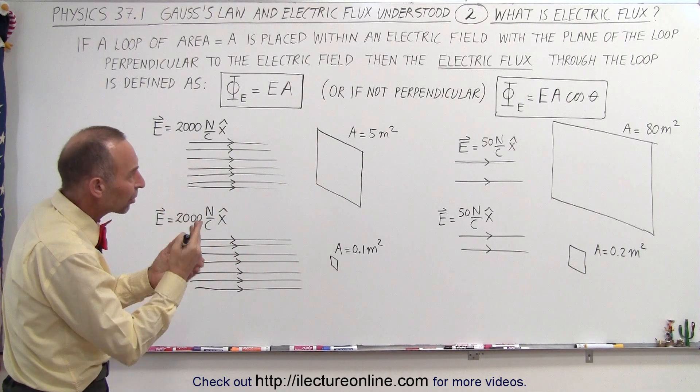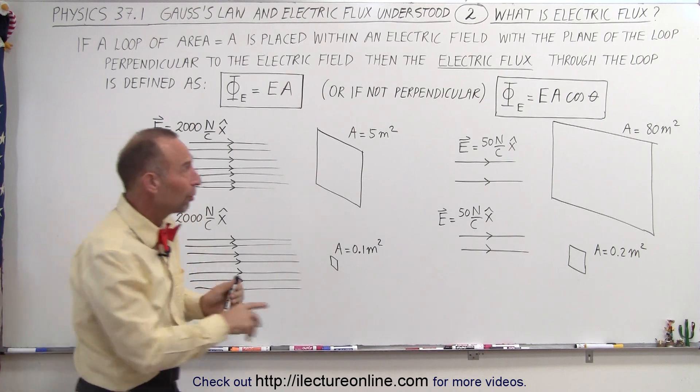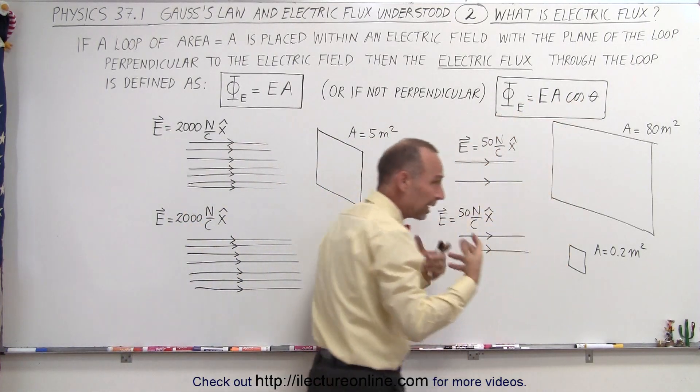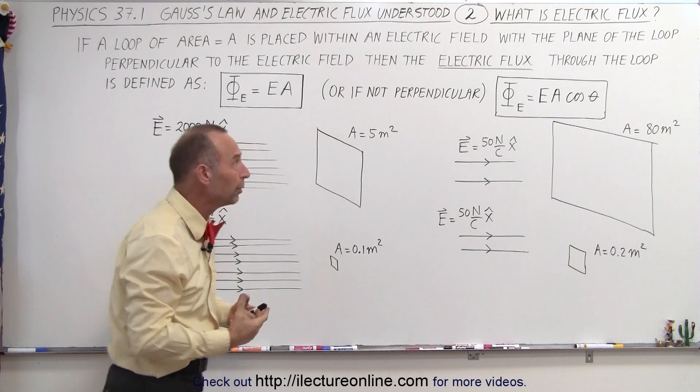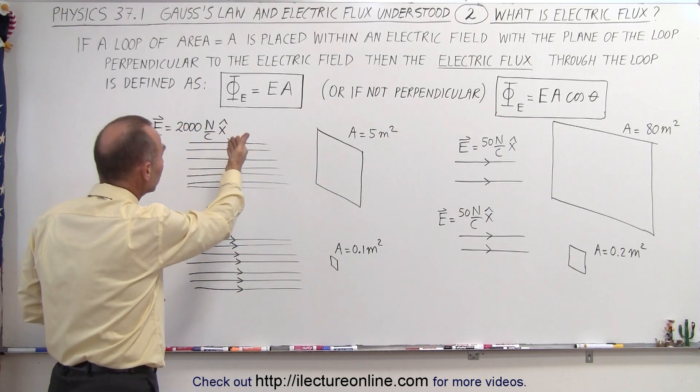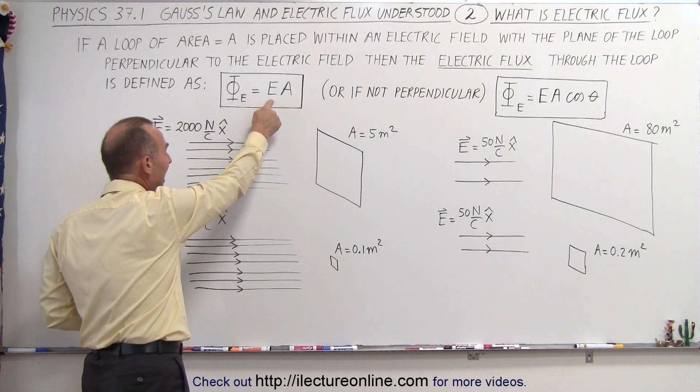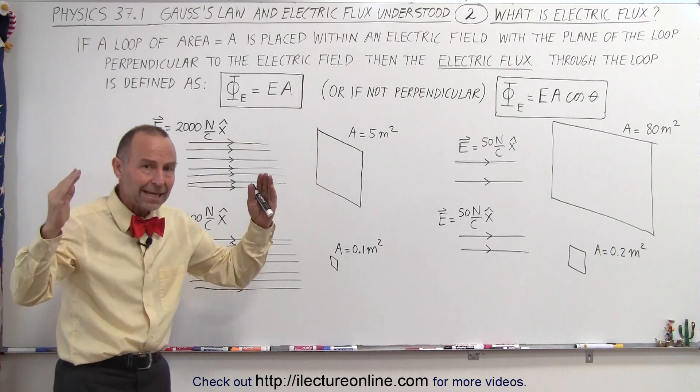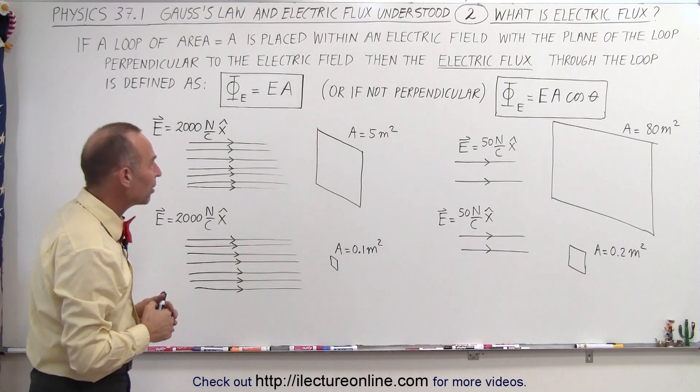then the electric flux through the loop—and those are important words because typically we think about electric flux through a loop—will be defined as equal to the product of the magnitude of the electric field and the magnitude of the area.